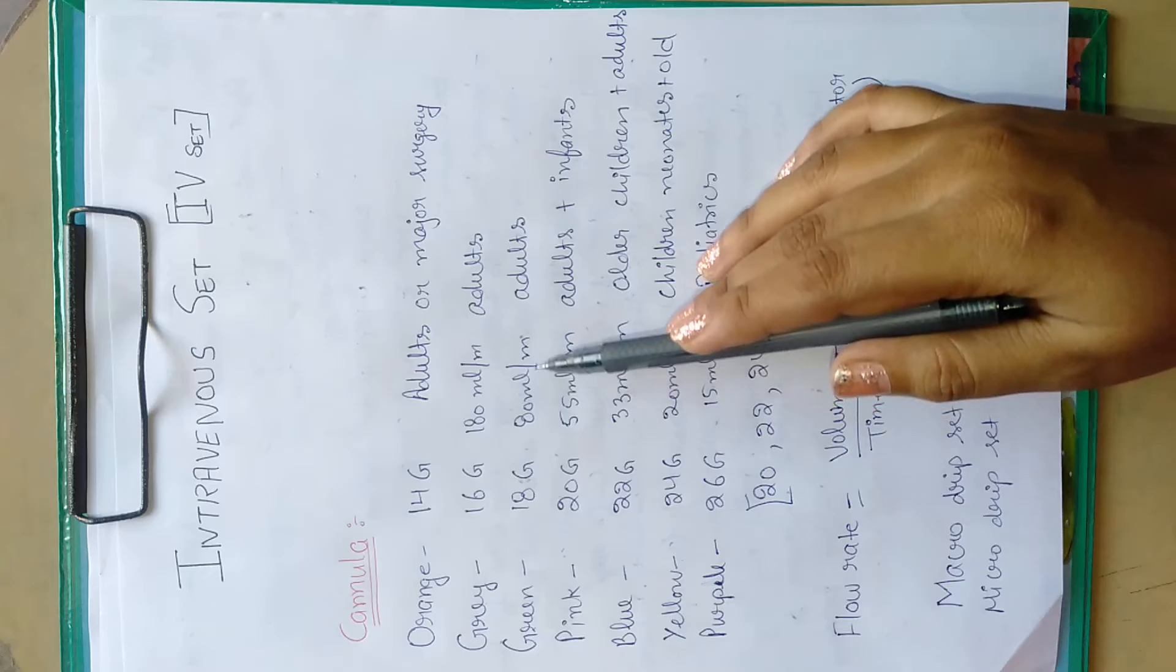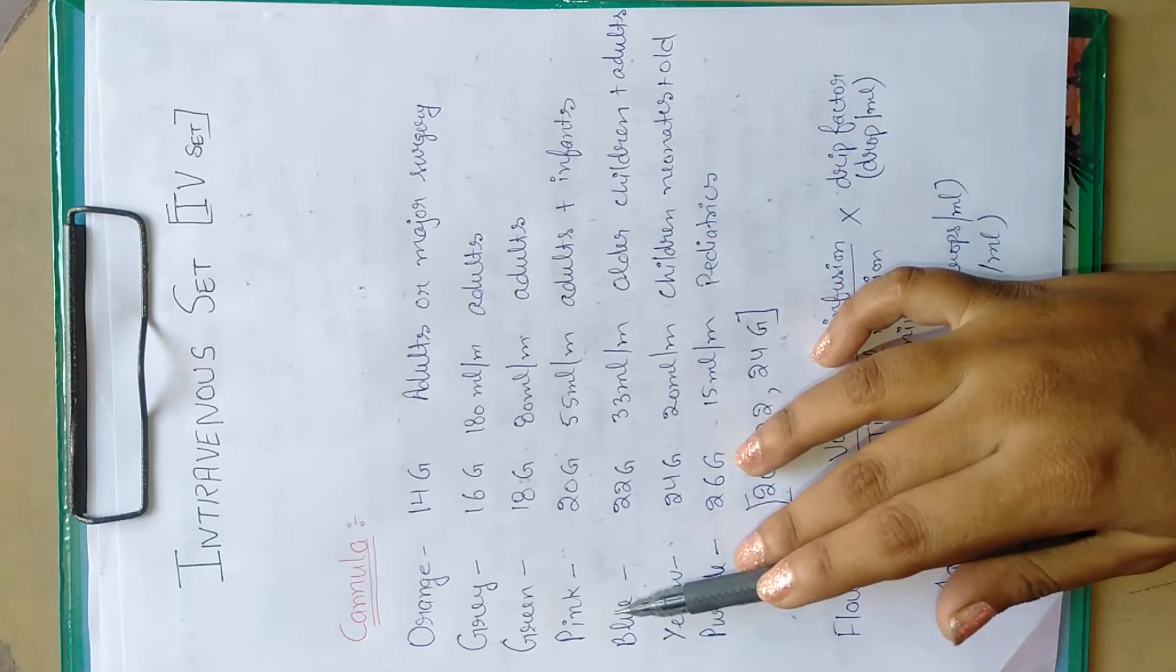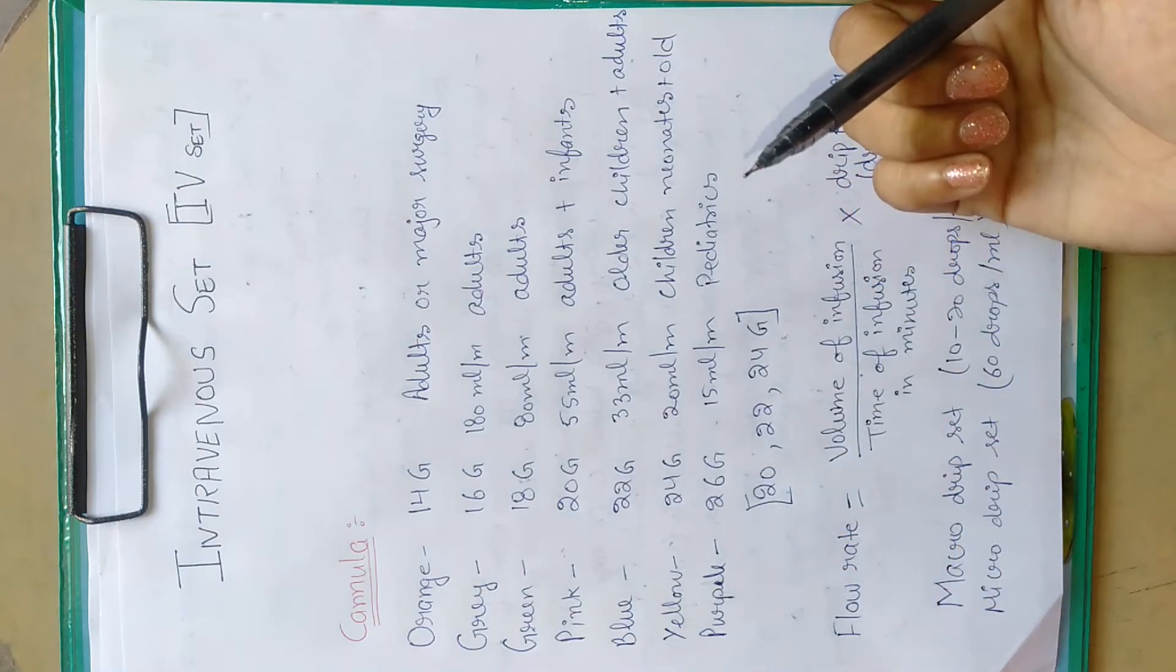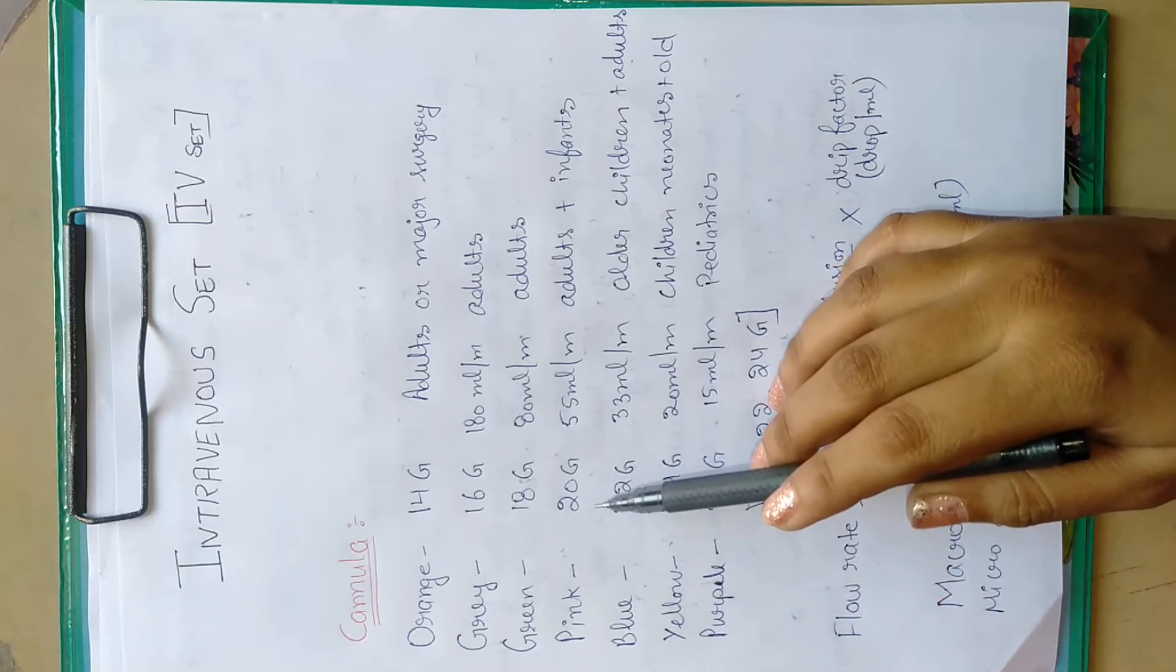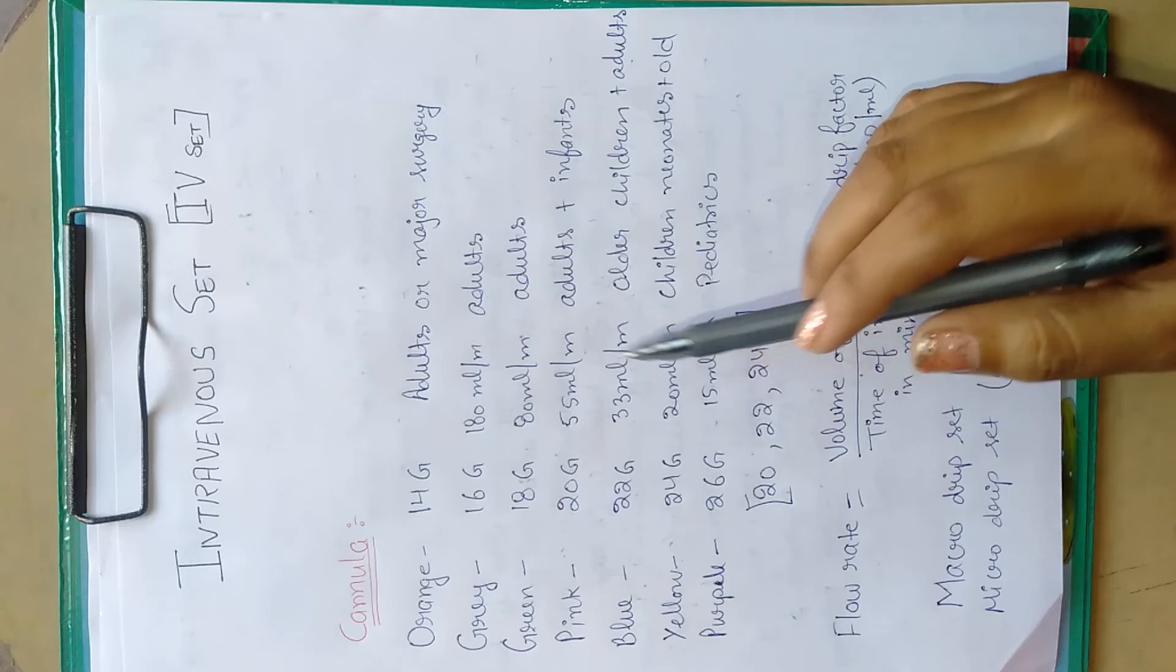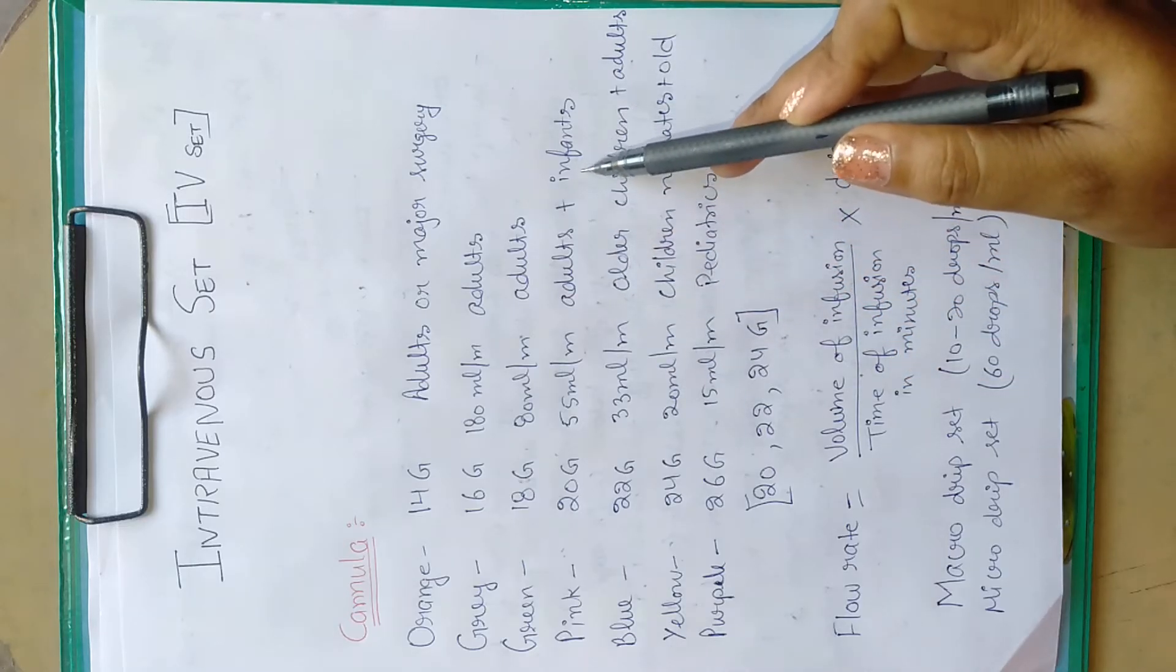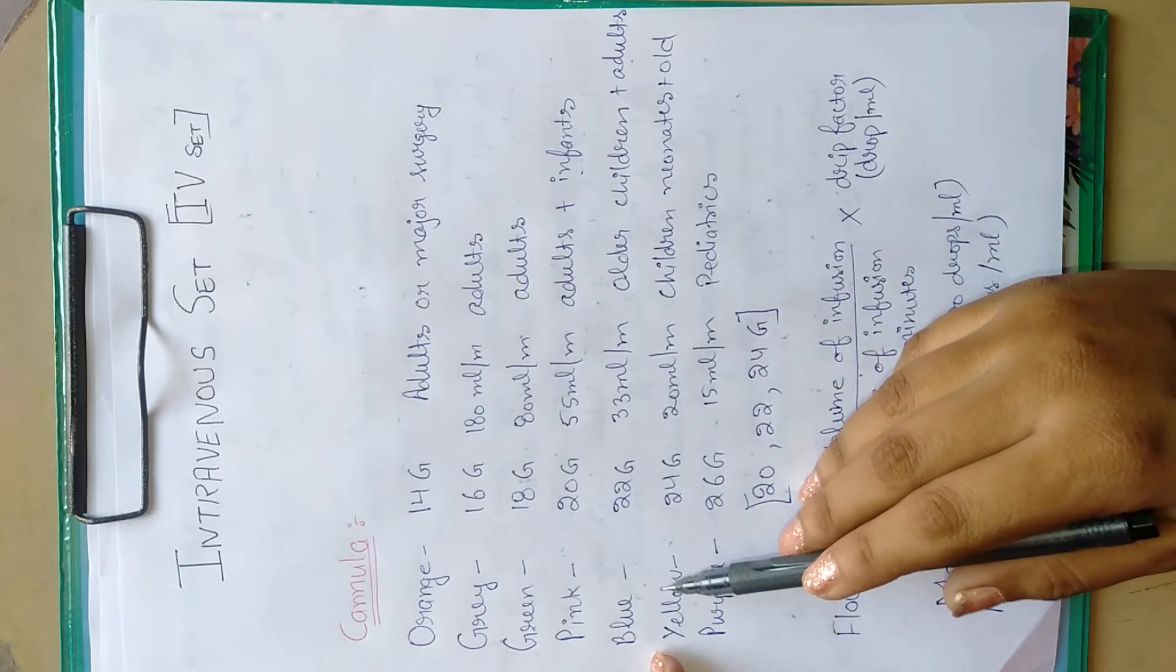Pink colored cannula of 20 gauge with 55 ml per minute fluid flow rate is used for adults and infants.